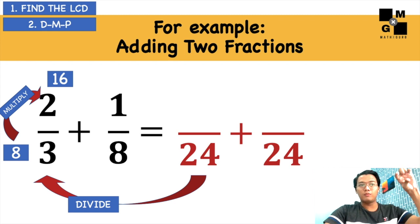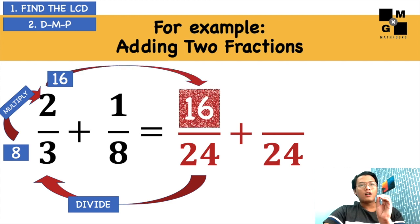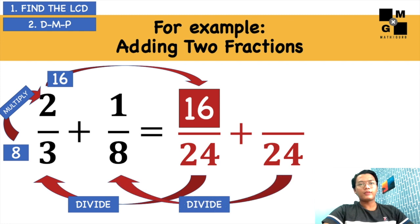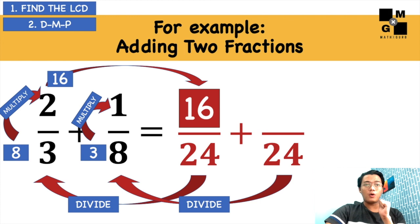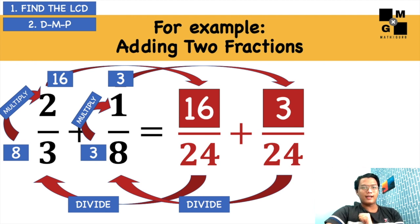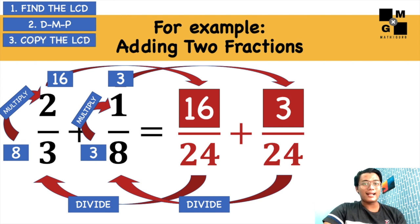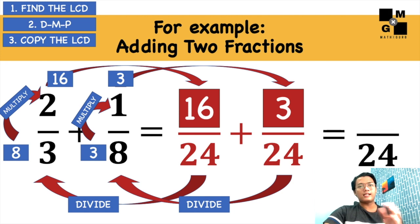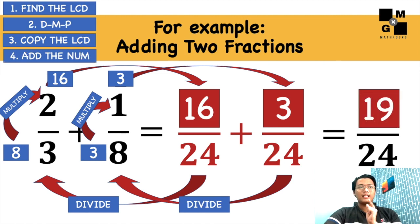We're done with divide, we're done with multiply, then we'll proceed with P — the put. So 16, put it to the corresponding fraction. That will be 16 over 24. Next, 24 divided by 8, it will give us 3. Then multiply it to the numerator, you will get 3, and then put 3 on the corresponding fraction. Since we now have 16 over 24 and 3 over 24, copy the LCD and add the numerators. 16 plus 3 will give us 19. Final answer is 19 over 24.